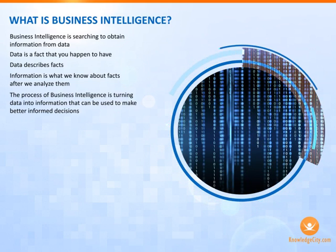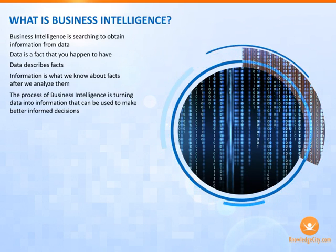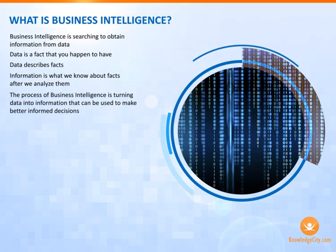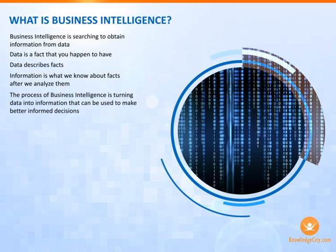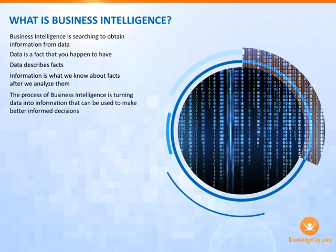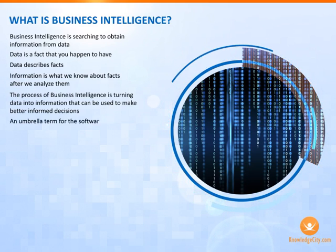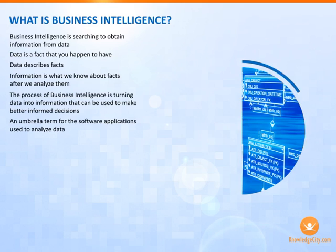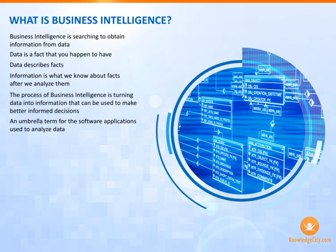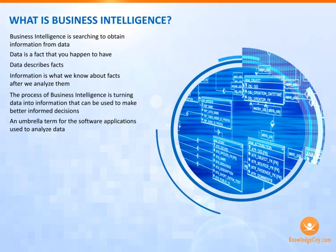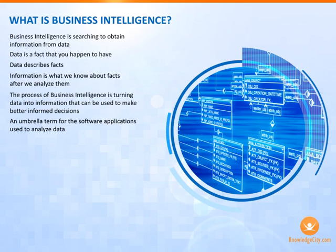What about business intelligence software? You can think of it as a kind of shortcut. Doing the manual math is fine when you only have 10 visitors to your site an hour, but doing it with hundreds or thousands of visitors can be daunting for even the most experienced statisticians. Business intelligence software is a kind of umbrella term for the software applications used to analyze data and create information. We'll talk about a lot of these types of software moving forward in the course. For now, all you need to know is the basic concept of what business intelligence software is and what it does.